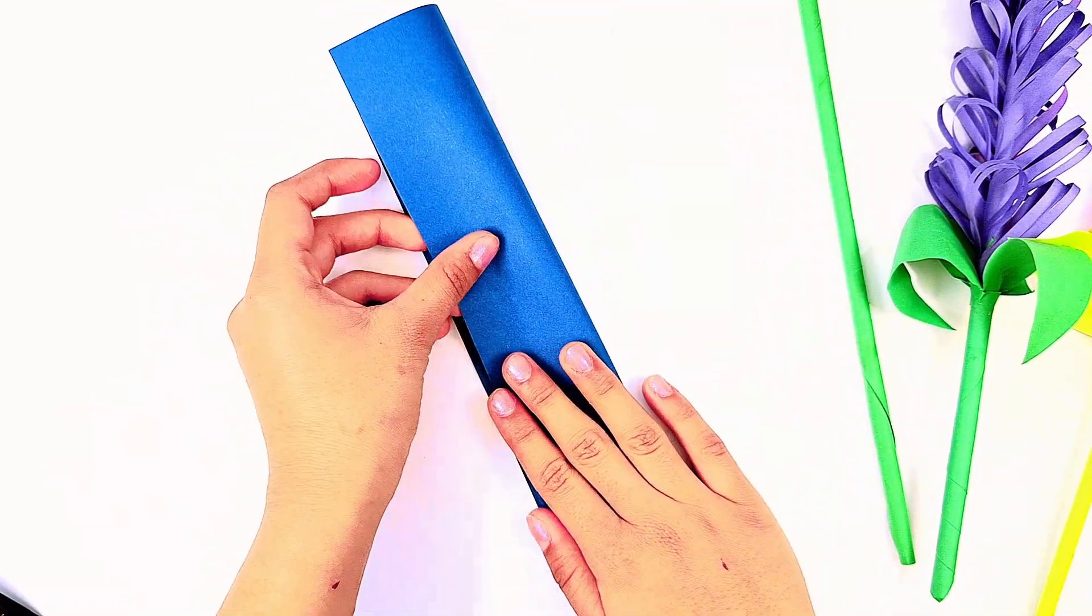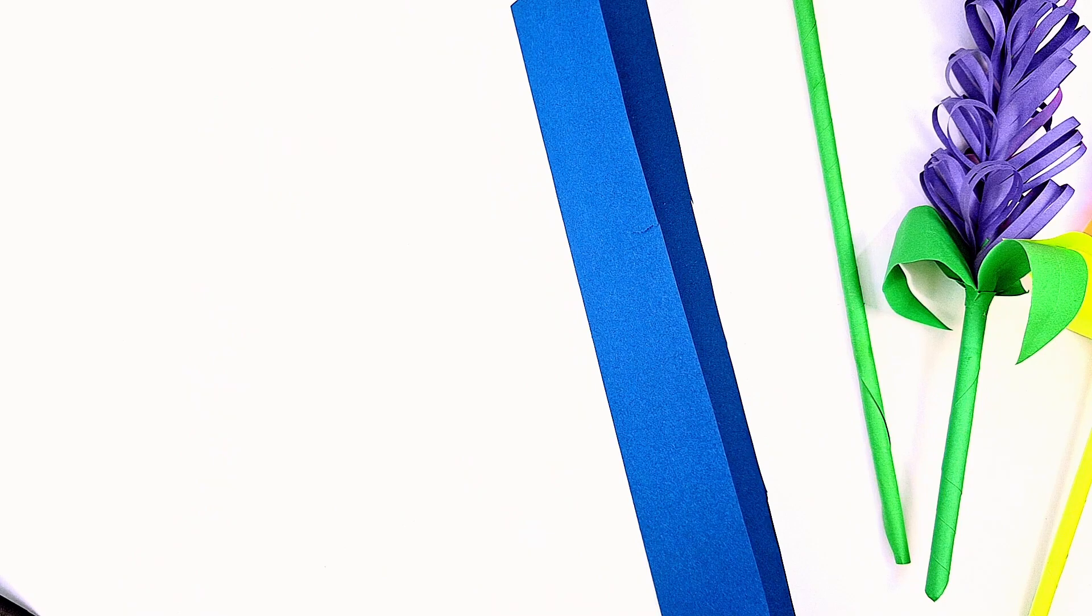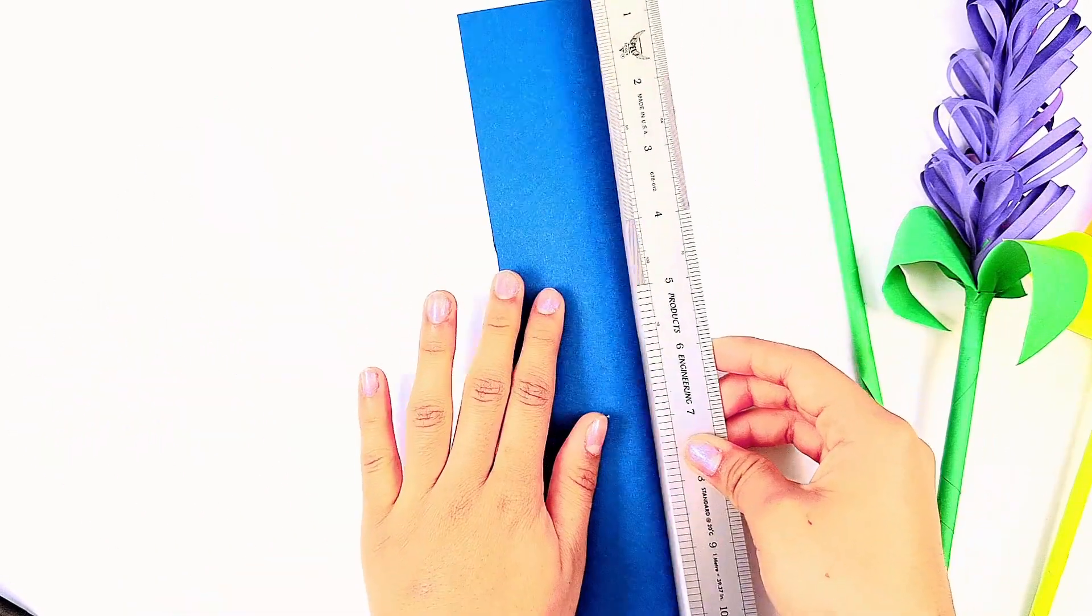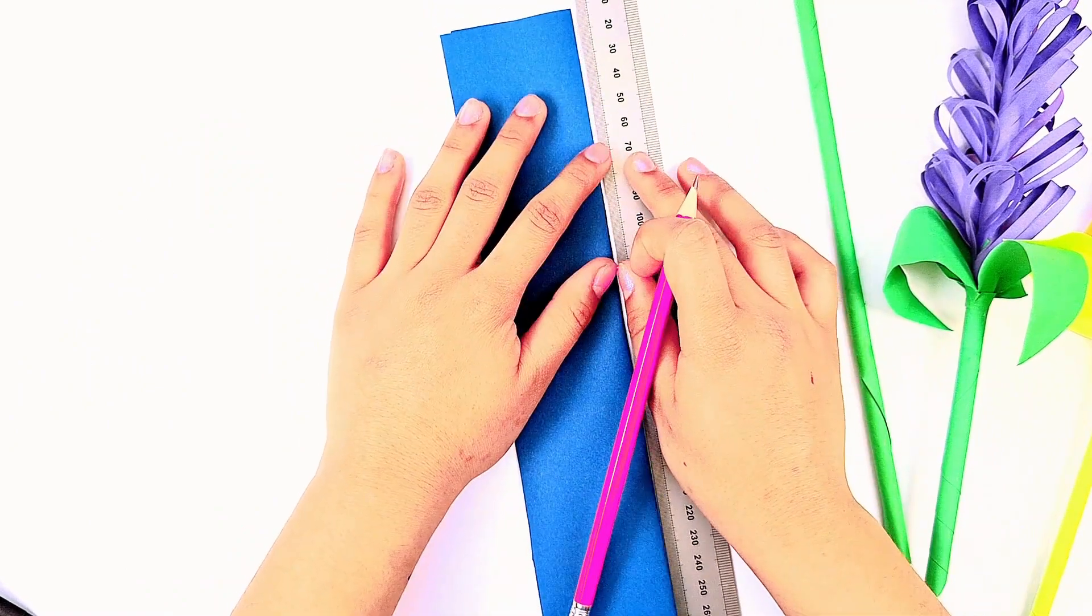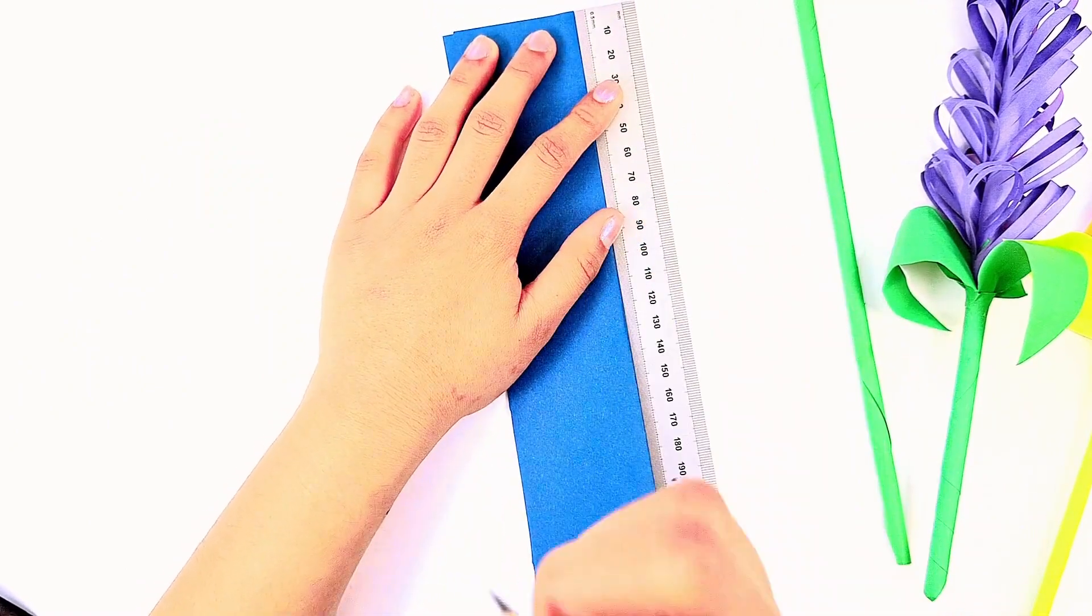Then fold one of the pieces in half again. Using a ruler, mark every 5mm on the folded edge of your strip of paper.